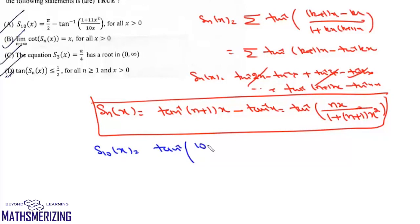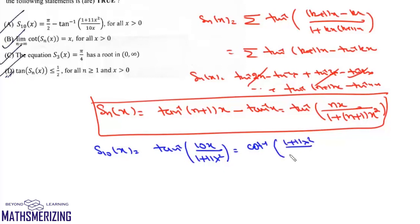For the first part, we need to find S_10(x). Substituting n = 10, S_10(x) = tan inverse(10x / (1 + 11x²)). Since x is greater than 0, we can write this as cot inverse((1 + 11x²) / 10x), using the identity that cot inverse(x) = π/2 minus tan inverse(x). So this gives π/2 minus tan inverse((1 + 11x²) / 10x), meaning option A is correct.